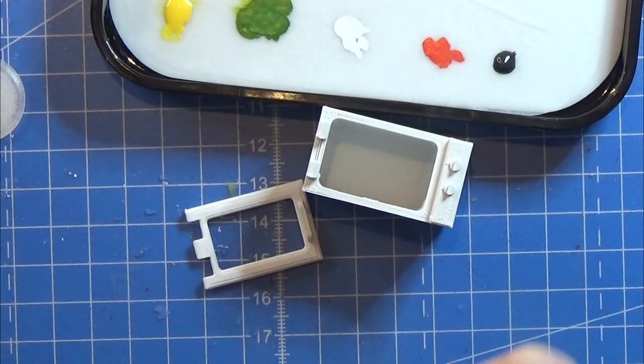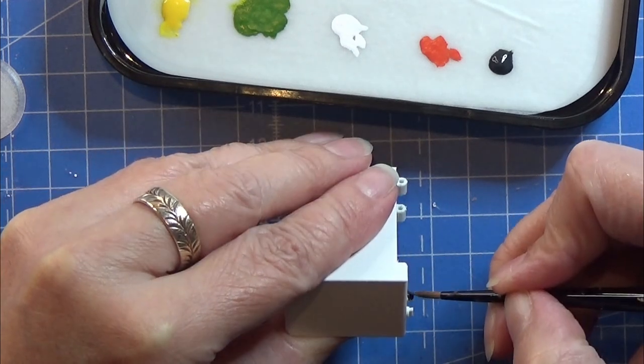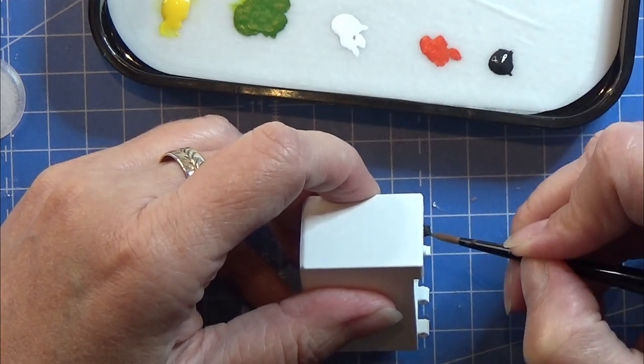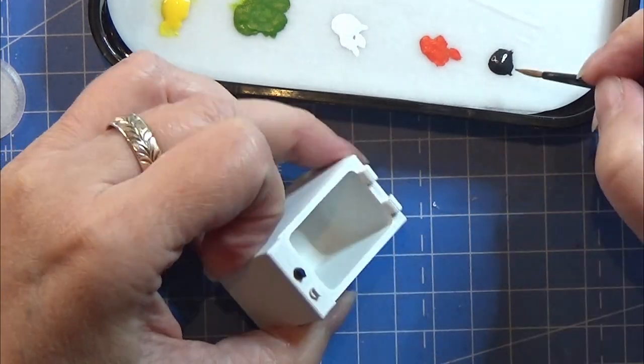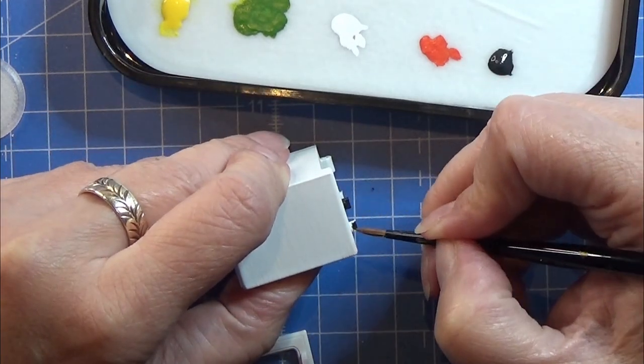And it's a three-part print as you saw here. The little microwave itself, the door itself, and then the little glass plate. I 3D printed the glass plate in some clear filament.